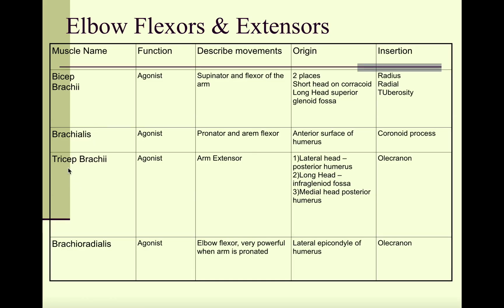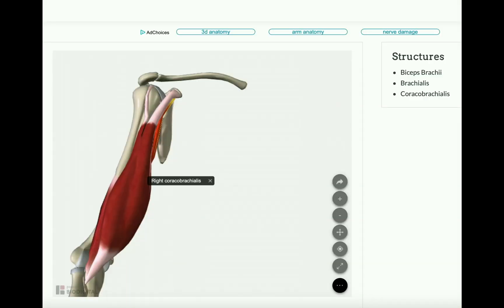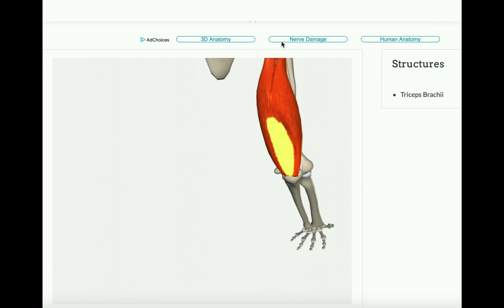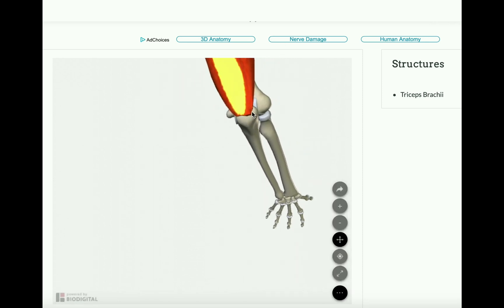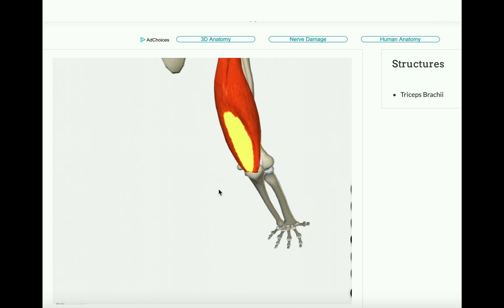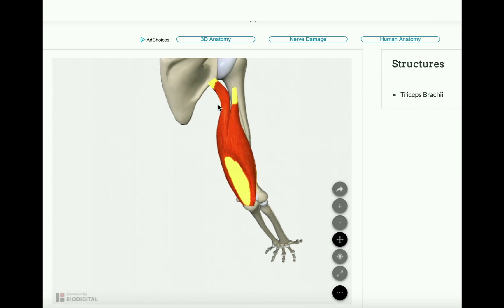Looking at the triceps brachii, we see that the lateral head, long head, and medial head all have different origins. The lateral head originates at the posterior humerus, the long head at the infraglenoid fossa, and the medial head also at the posterior humerus — but all three insert at the olecranon of the ulna. Here we can see the triceps and their shared insertion at the olecranon, that bulge at the elbow joint on the ulna. It's just the origins that differ across the three heads.